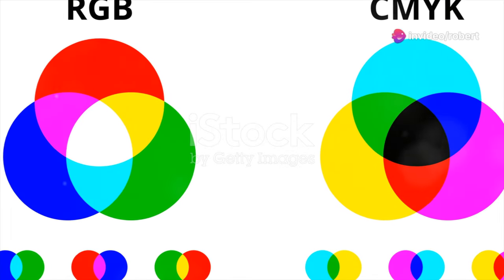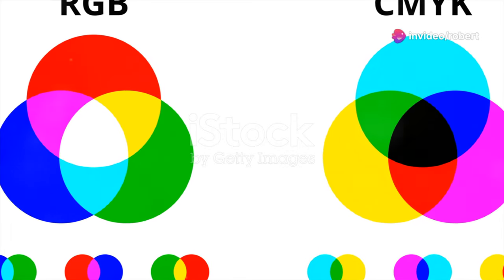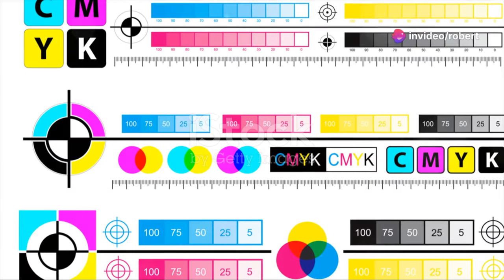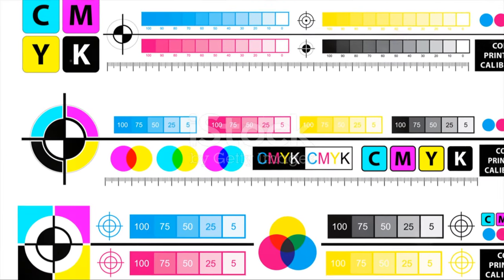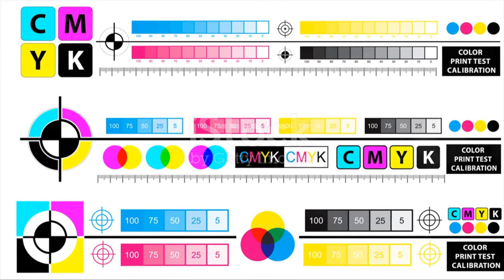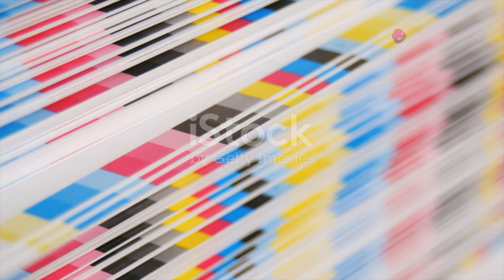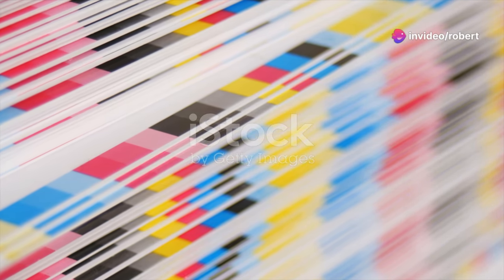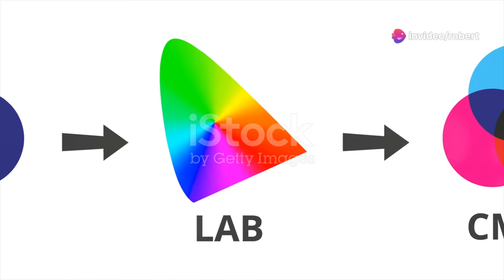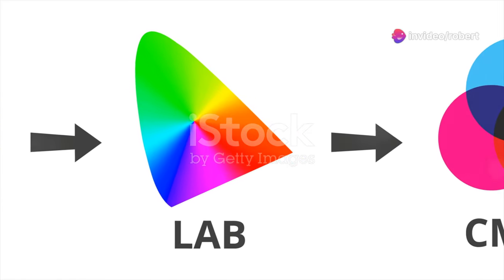CMYK, on the other hand, excels in print, but can't replicate the full range of colours achievable in RGB. This model uses cyan, magenta, yellow and black inks to produce images, making it the standard for printing. While it may not have the same vibrancy as RGB, it ensures accurate colour reproduction on physical media.